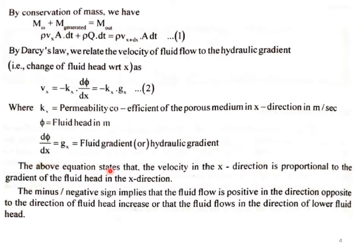The above equation states that the velocity in the x-direction is proportional to the gradient of the fluid head in the x-direction. The negative sign implies that the fluid flows in the direction of lower fluid head, i.e., fluid flow is positive in the direction of decreasing fluid head.